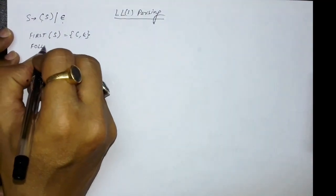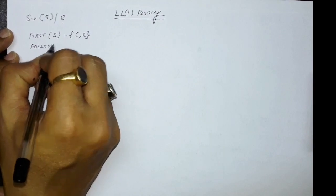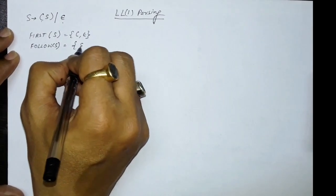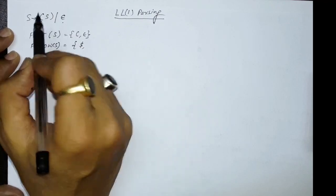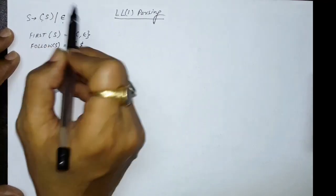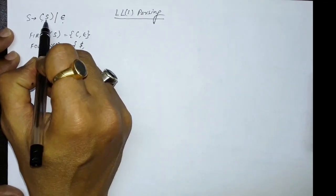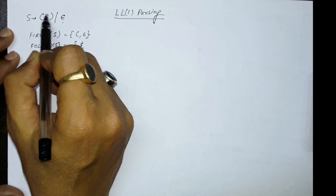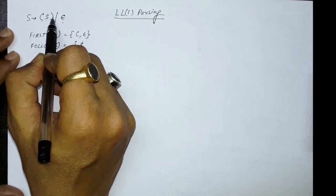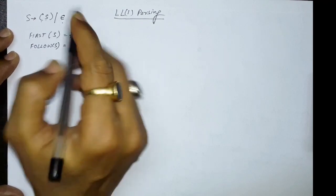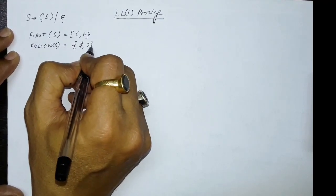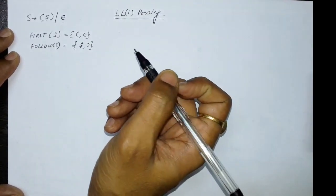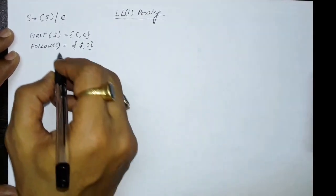Now let's find the FOLLOW set. FOLLOW of a start symbol will certainly contain dollar. Since S also appears on the right-hand side, FOLLOW of S will include the symbols following it. So closing bracket will also be in FOLLOW of S. So FOLLOW of S contains dollar and closing bracket.